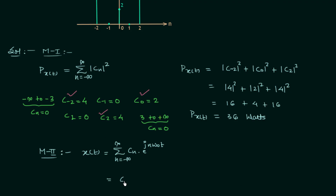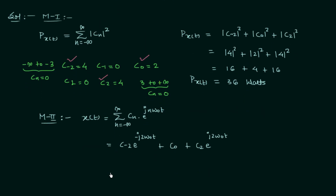Writing the three terms directly: we have c_{-2} · e^{−j2ω₀t} + c_0 + c_2 · e^{j2ω₀t}. Substituting the values: four e^{−j2ω₀t} plus two plus four e^{j2ω₀t}.